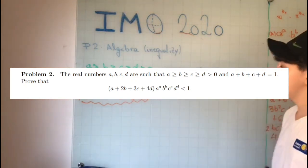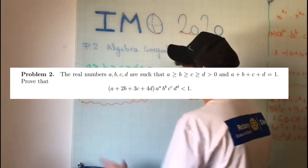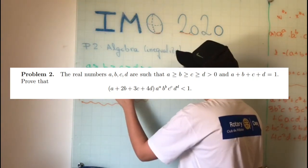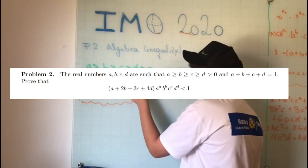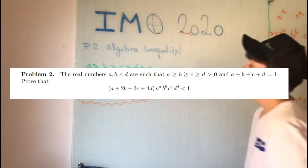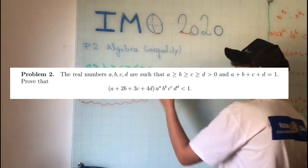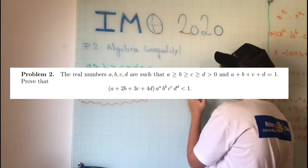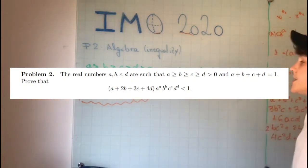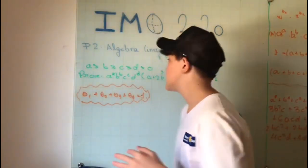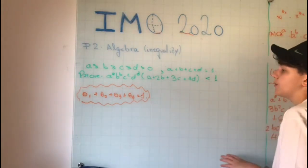We should prove that a^a times b^b times c^c times d^d times (a + 2b + 3c + 4d) is less than one. It's not less than or equal to one, it's less than one.